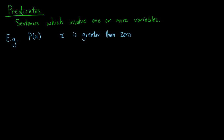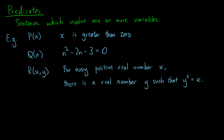There is nothing special in the letter x, so we can define another predicate q of n to be 'n squared minus 2n minus 3 equals zero.' We can throw in more variables to have r defined as: for every positive real number x, there is a real number y such that y squared equals x. It is important to bear in mind that predicates are not statements, because it is not meaningful to talk about truth values when variables are present.